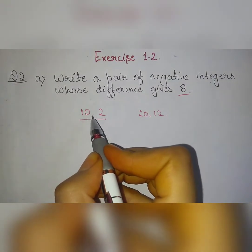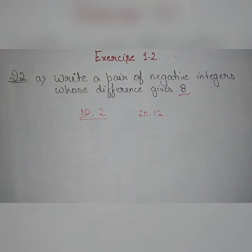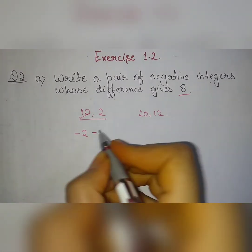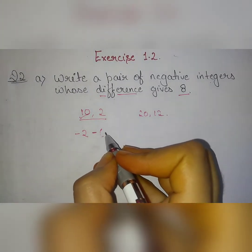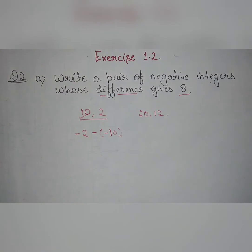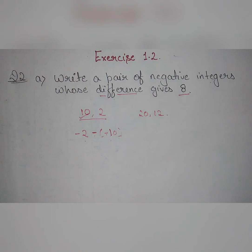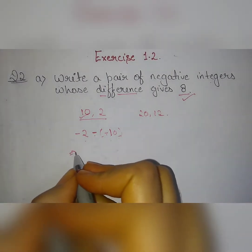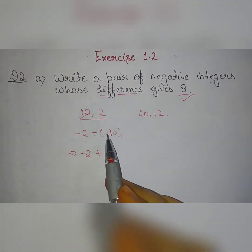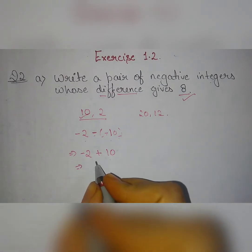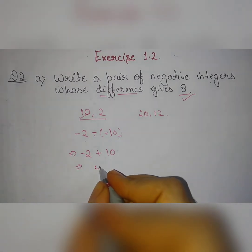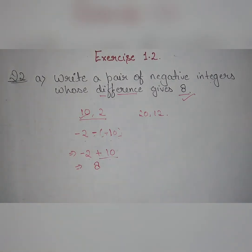To get the difference as positive 8, we will take the greater number in the second position. When we put them in the condition — minus 2 minus minus 10 — this minus and minus will become plus, which gives us positive 8. So minus 2 minus minus 10 becomes minus 2 plus 10, and our answer will be positive 8, since our greater integer is in the positive position.